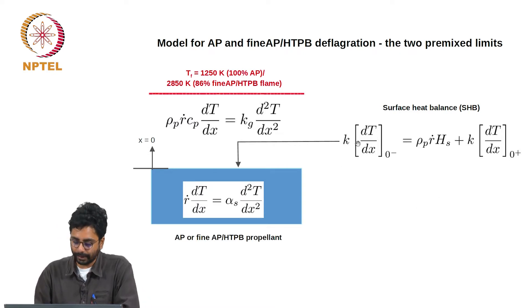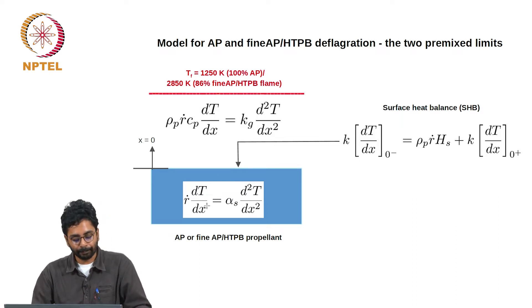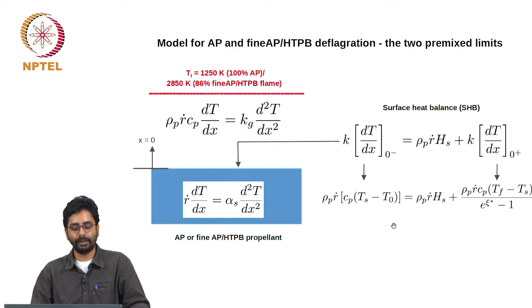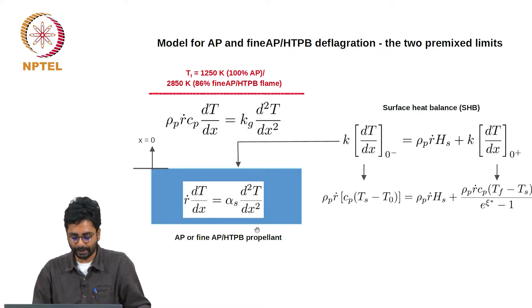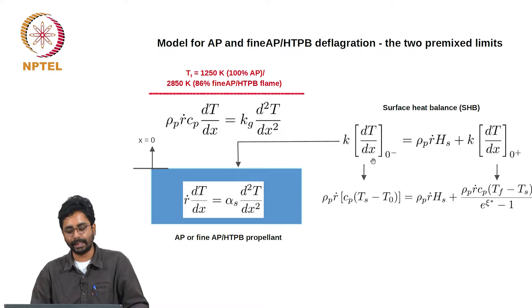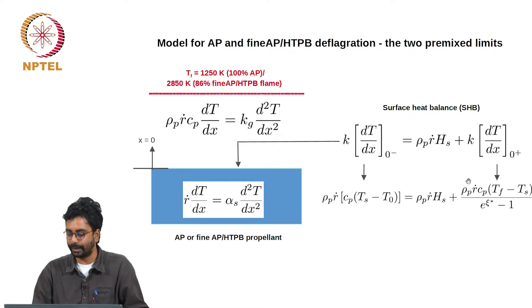We can solve for these slopes by integrating the one-dimensional convection-diffusion in the gas phase and the heat conduction equation in the solid phase. These have simple solutions — the solutions are exponential profiles, and from the profiles you can actually calculate the slopes. The slope in the condensed phase is rho_p * r_dot * c_p * (T_s - T_0). For a thin flame approximation with convection-diffusion balance in the gas phase, the gradient of temperature at the surface takes this form.